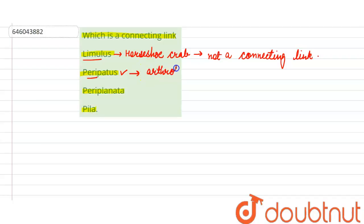The third option is Periplanata, which is the scientific name of cockroach, and is not a connecting link. So this option is also incorrect, just like the first one.